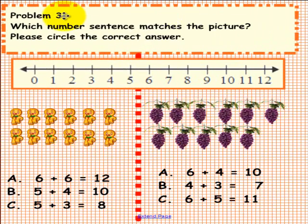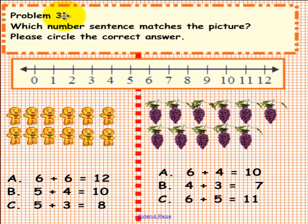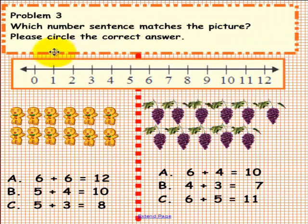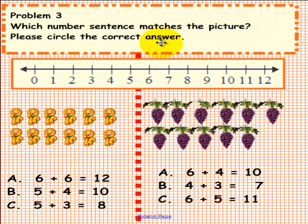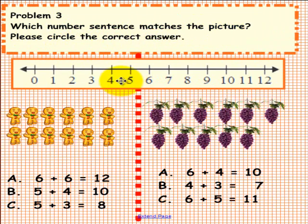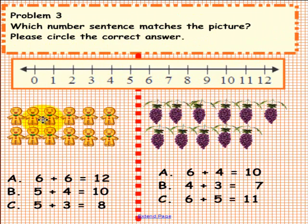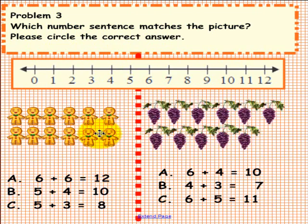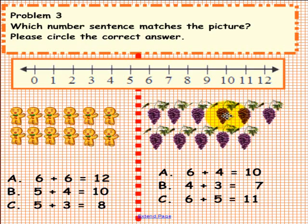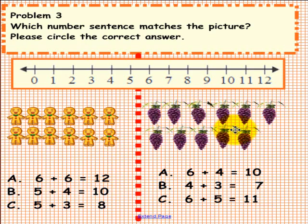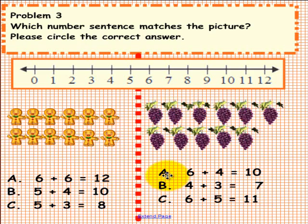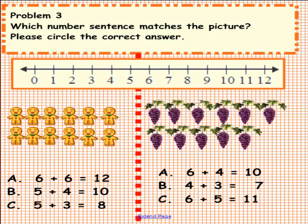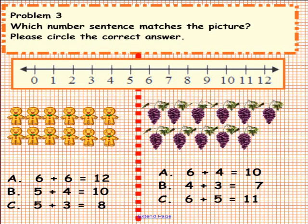Problem 3. Please do not pick up a pen until you are asked to do so. Which number sentence matches the picture? Please circle the correct answer. Here is a number line if you need it. Below we have some gingerbread men — circle the correct answer for the gingerbread men. And on the right we have some grapes. Count the number of grapes and determine which one of these is the correct answer. Pick up a pen to solve this problem.